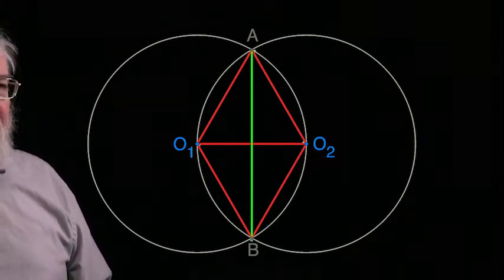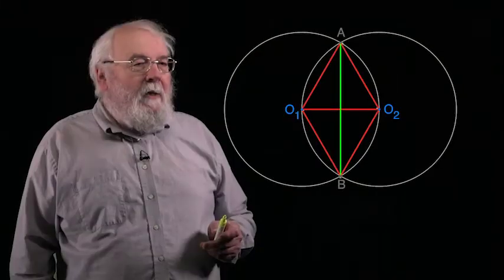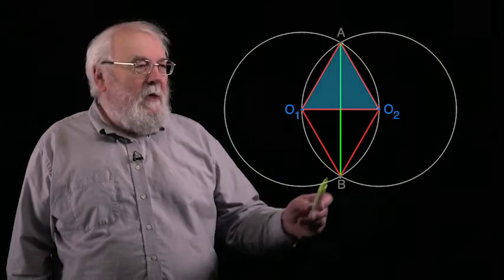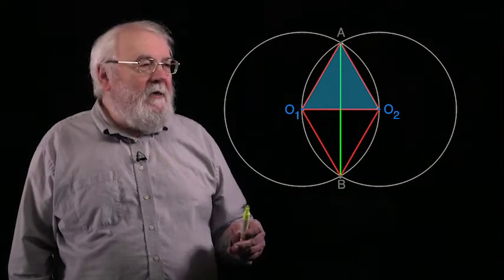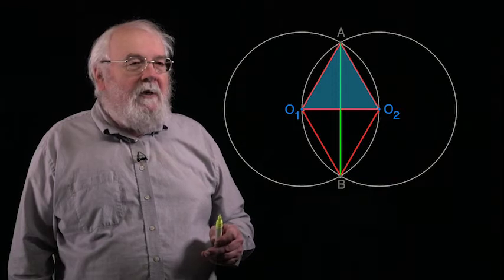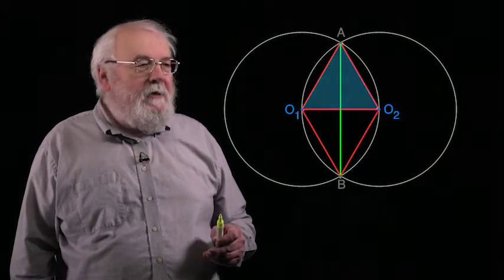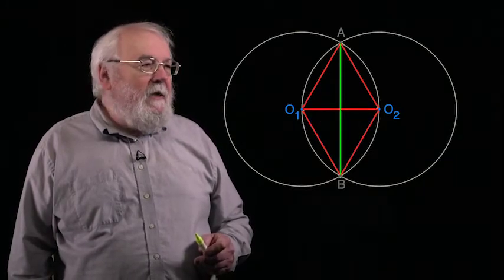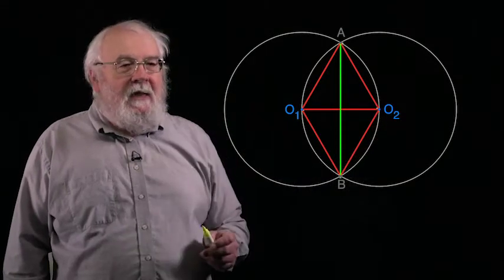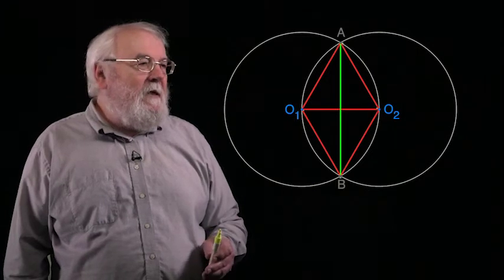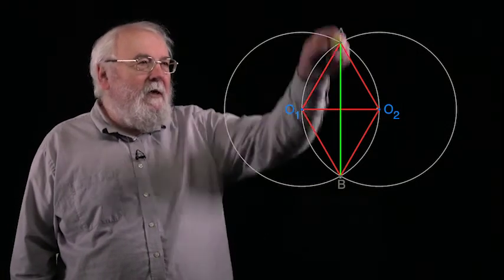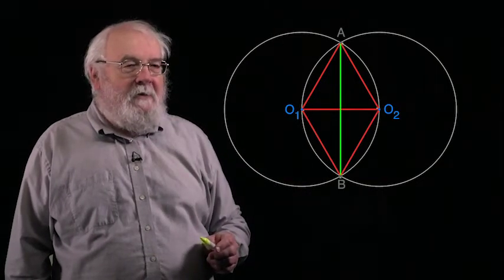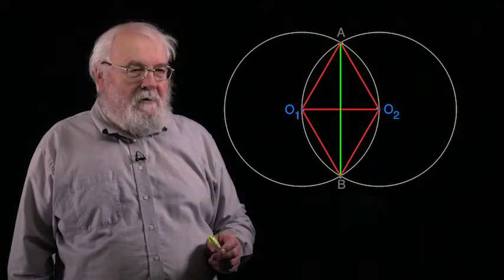We've also drawn in this vertical green line. Now, because the top triangle, that's A, O1, O2, has side lengths equal, it's an equilateral triangle, and the angles in the corners are all 60 degrees. The same applies to the bottom triangle. Notice that the line through O1 and O2 is an axis of symmetry of the whole figure. There's another axis of symmetry, the green line, and those two axes of symmetry are meeting at right angles.